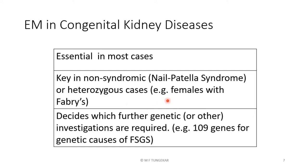A similar situation exists in Fabry disease. In females, it may be heterozygous, and in these heterozygous females, EM with classic inclusions may be the first indication of the presence of the disease. Fabry disease in females may not be associated with significant cardiovascular abnormalities, or the cardiovascular abnormalities may occur very late in life, but the presence of inclusions indicates the disease. Further investigation is then called for, and the whole family may be investigated.